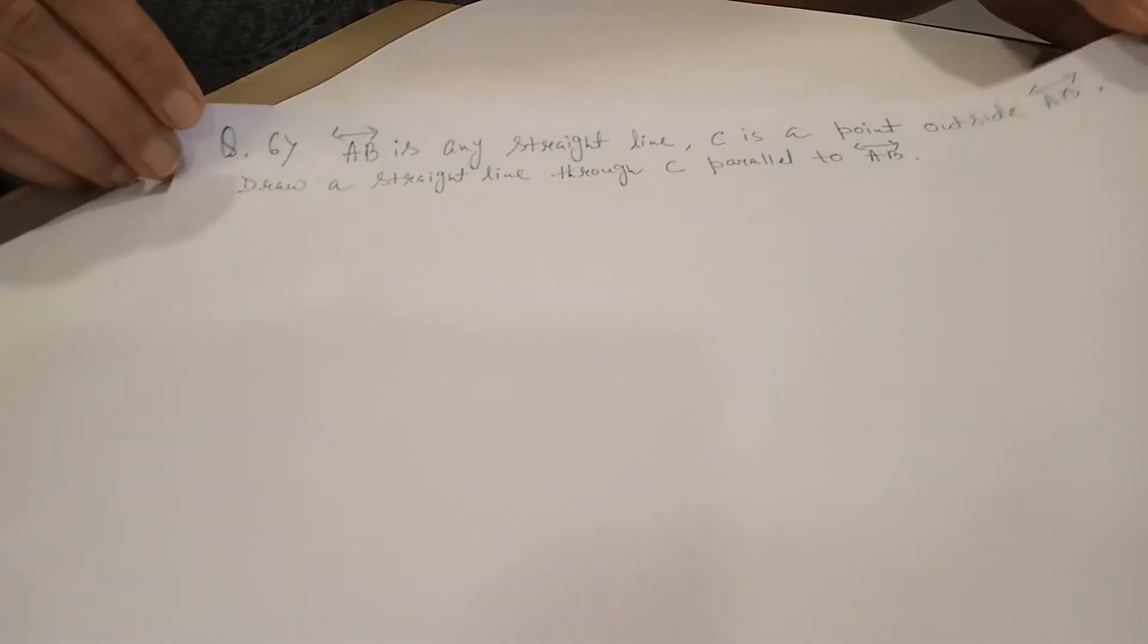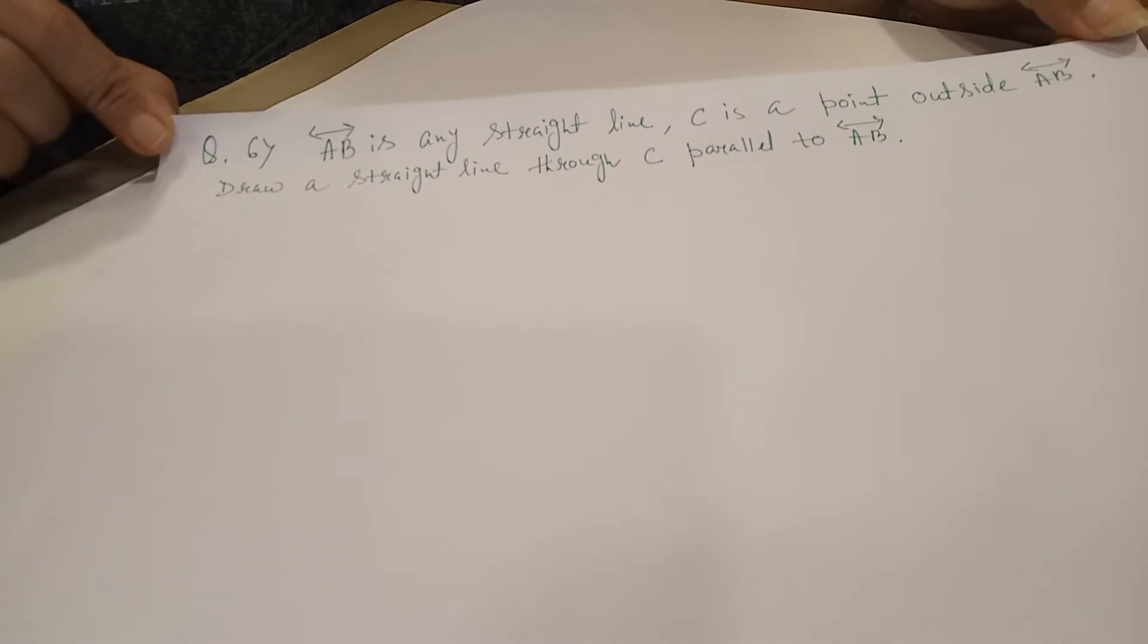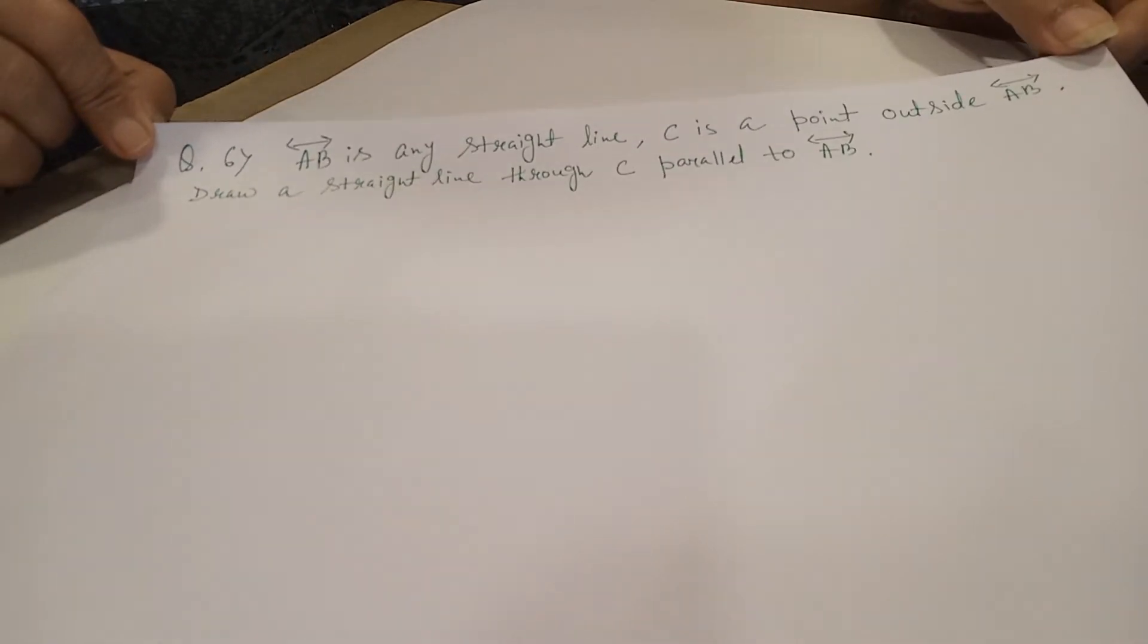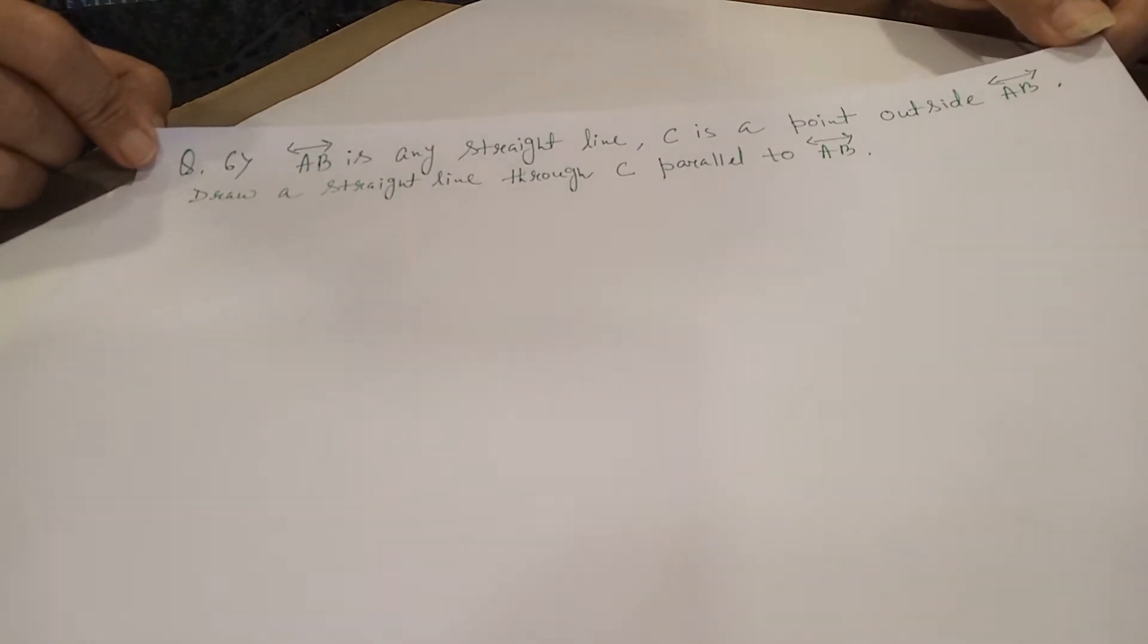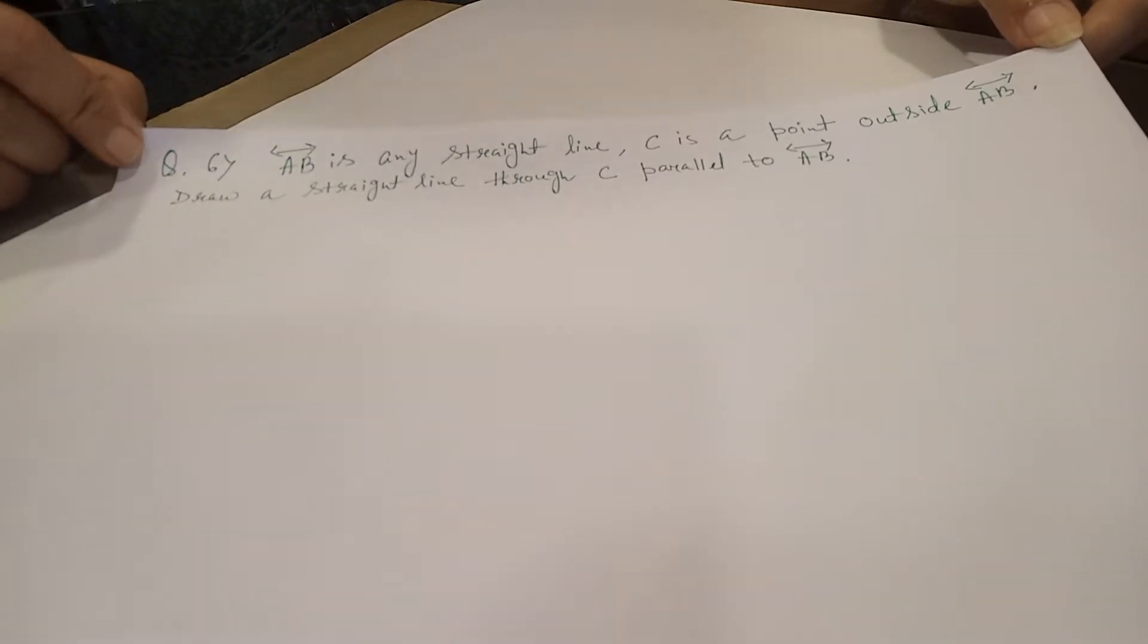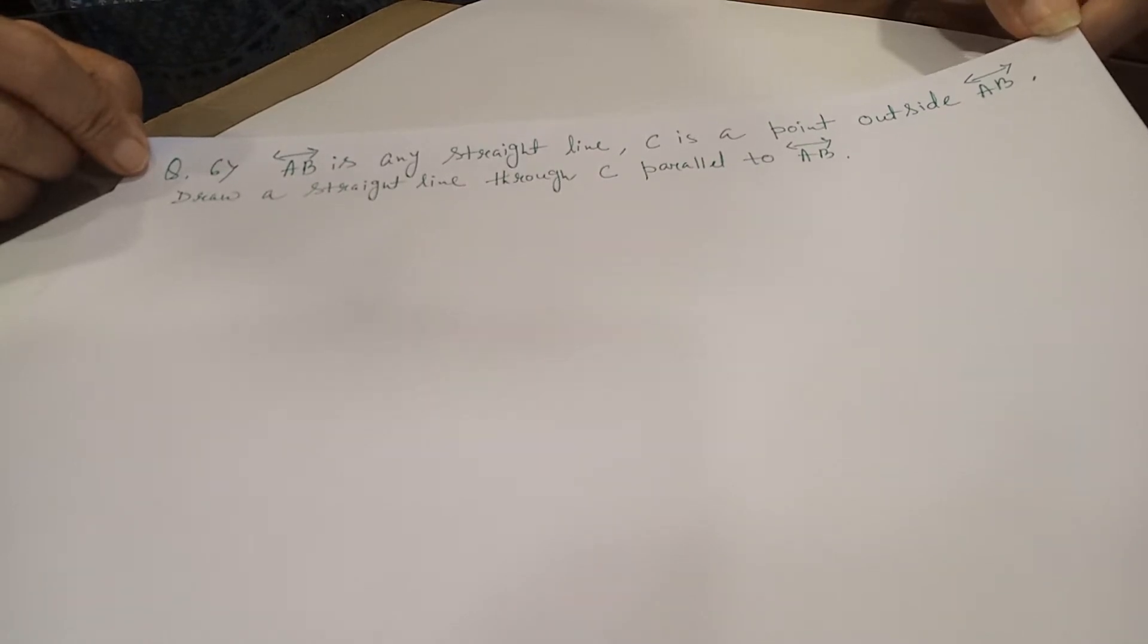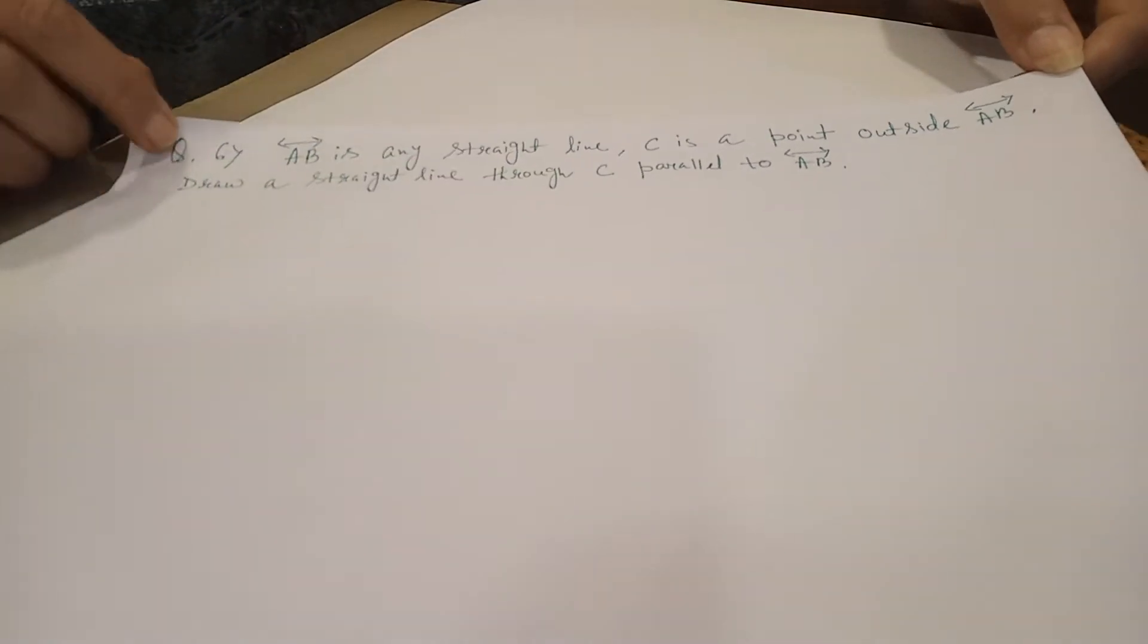Hello students. Now, next type of construction. AB is any straight line. Measurement of AB is not mentioned. C is a point outside AB, an external point. Draw a straight line through that external point C parallel to the line AB. Clear?